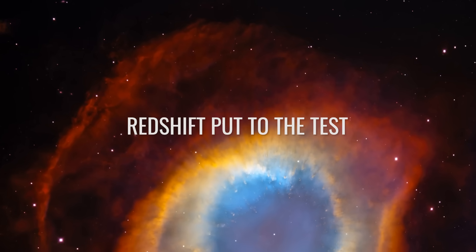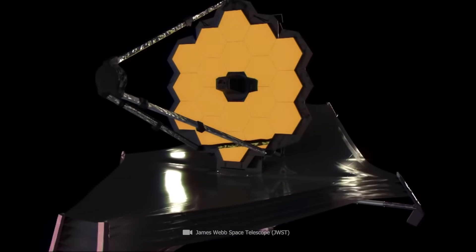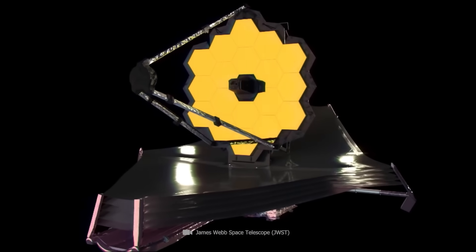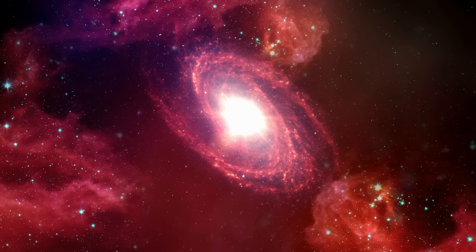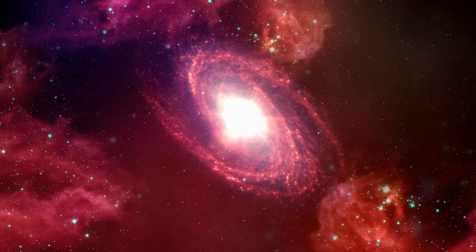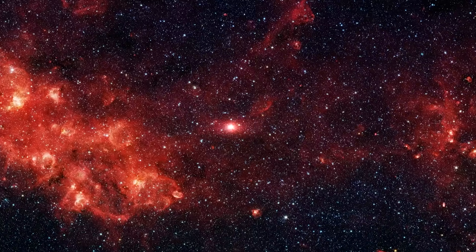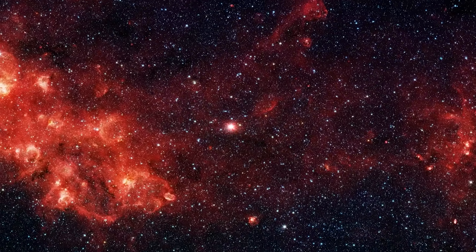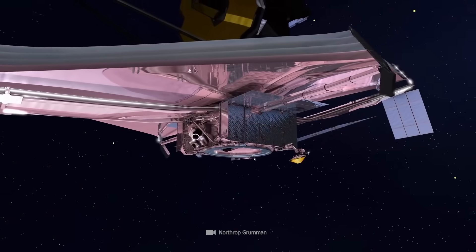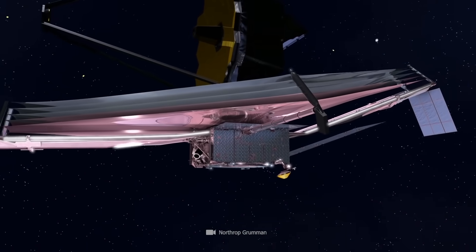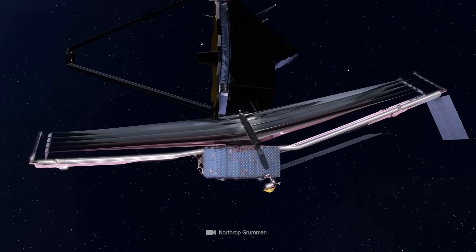Redshift put to the test. Currently, scientists are tearing their hair out over how James Webb can show galaxies that can't actually exist. The problem has several solutions, and one of them says that redshift may not have been measured or evaluated correctly. James Webb's measurements have now been confirmed by all the major stationary telescopes on Earth.